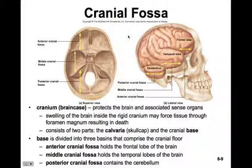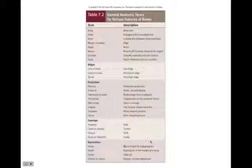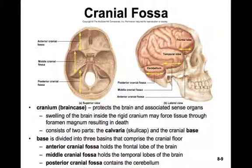When we look at the cranium itself, it has a number of different fossae inside. A fossa is a general term for a depression. There are three major fossae in the skull: the anterior cranial fossa, which holds the frontal lobe of the brain; the middle cranial fossa, which holds the temporal lobes; and the posterior cranial fossa, which contains the cerebellum. The brain case — these eight bones — is there to protect the brain and associated sense organs. If the brain swells inside this rigid cranium, it may force tissue through the foramen magnum — foramen meaning hole, magnum meaning very big — and that can result in death. Swelling of the brain is very, very dangerous.